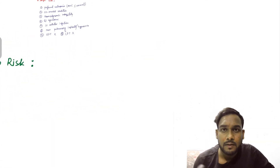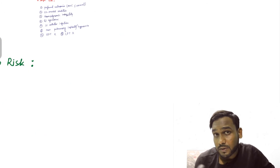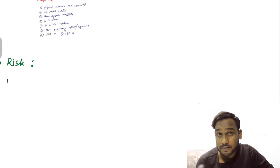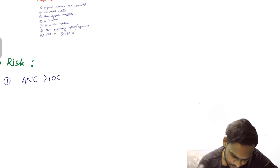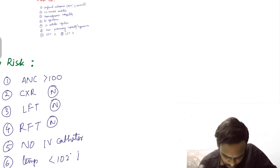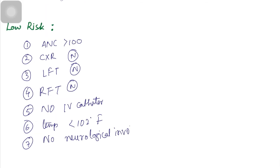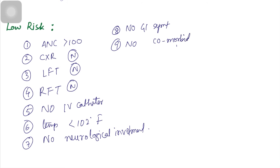Low risk factors include a normal chest X-ray, normal liver function test, normal renal function test, and an absolute neutrophil count more than 100. Other low risk features include no IV catheter-associated infections, peak temperature less than 102°F, no neurological changes, no GI symptoms, and no comorbid conditions.